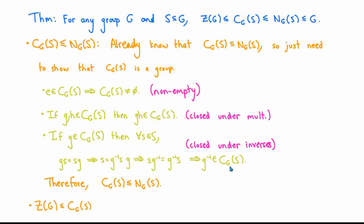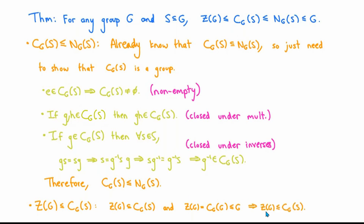Finally, to see why the center is a subgroup of the centralizer of S in G for any S: we've already shown that the center of G is a subset of the centralizer of S in G, and we also remarked that the center of G is the centralizer of G in G, which as a special case of what we've just proved is a subgroup of G. Therefore, the center of G is a subgroup of the centralizer of S in G for any S. That completes the proof of this theorem.